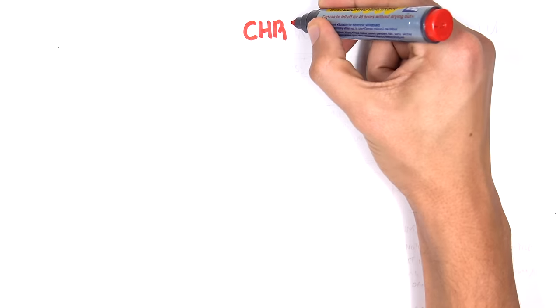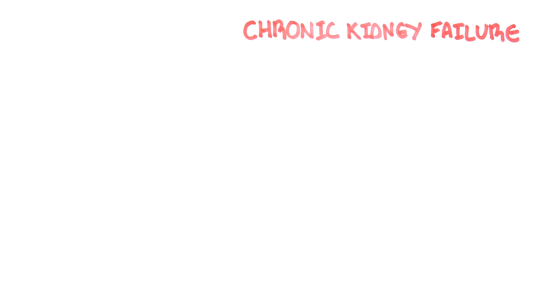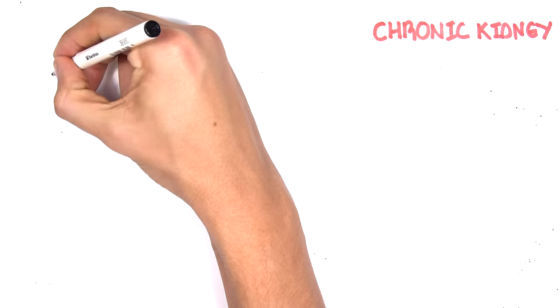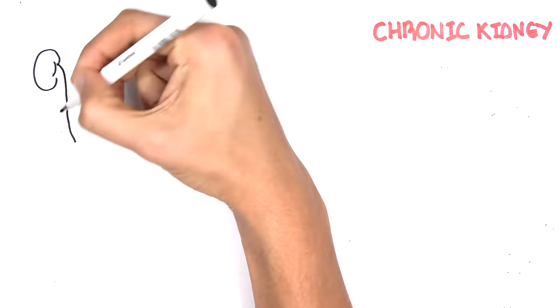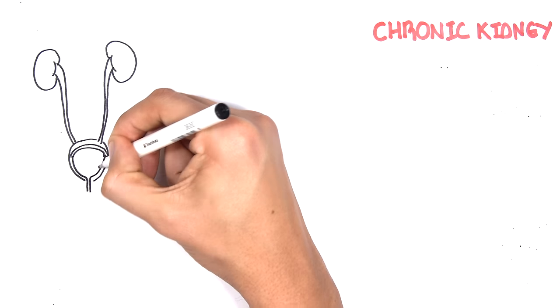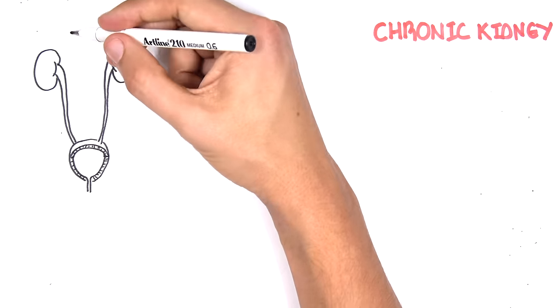In this video we're going to talk about chronic kidney failure, which can also be referred to as chronic kidney disease. Chronic kidney failure is essentially where you have an irreversible loss of the nephrons — the functional units of your kidneys — and this can result in a toxic state such as uremia, which we'll learn about in this video.